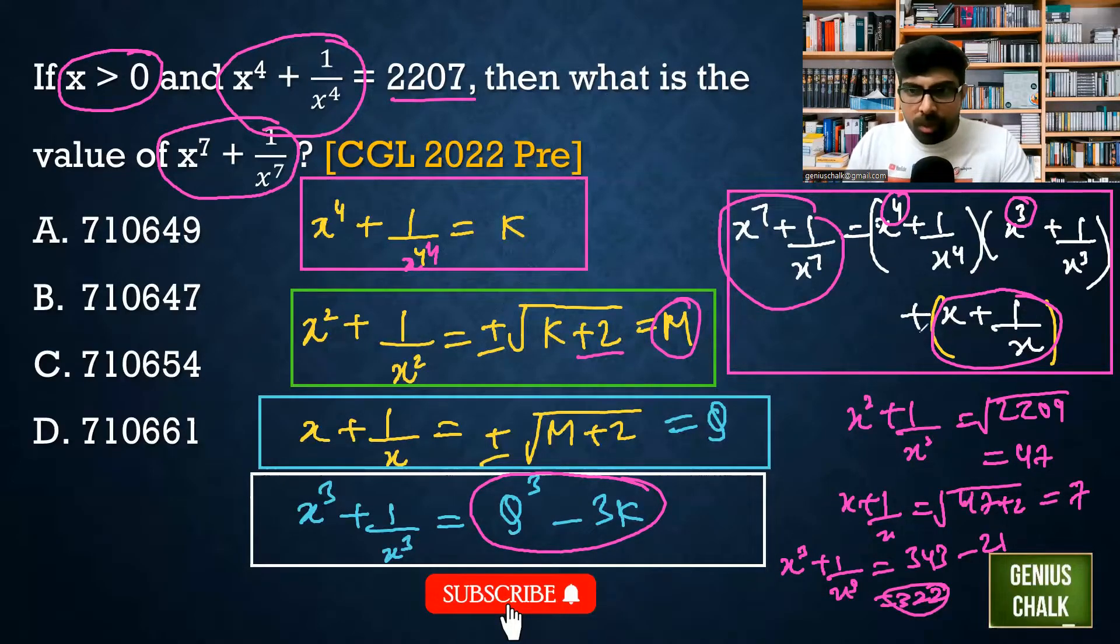It will be x^4 plus 1 by x^4 already given as 2207, multiply by x cube plus 1 by x cube which is 322, plus x plus 1 by x was coming as 7.